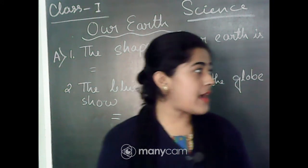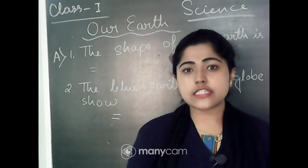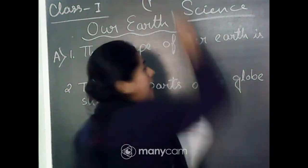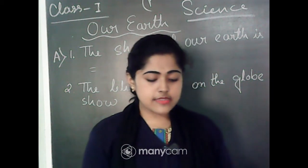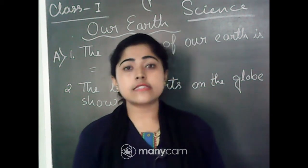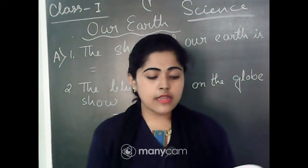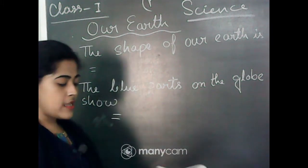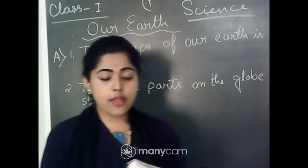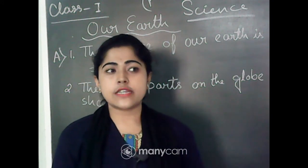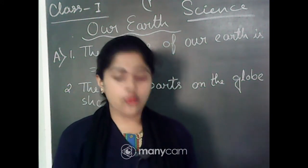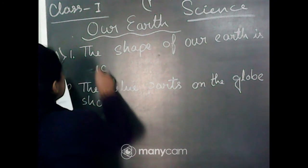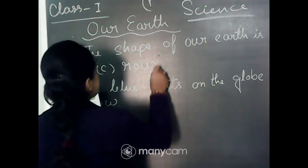Everyone take your copy book. We are starting the exercise part of this chapter on page number 57 — 'Our Earth.' Question A is 'Take the correct answer.' Question one: the shape of our Earth. The first option is square, second is rectangle, and third is round. You all know that the shape of our Earth is round, so the correct answer is option C: round.